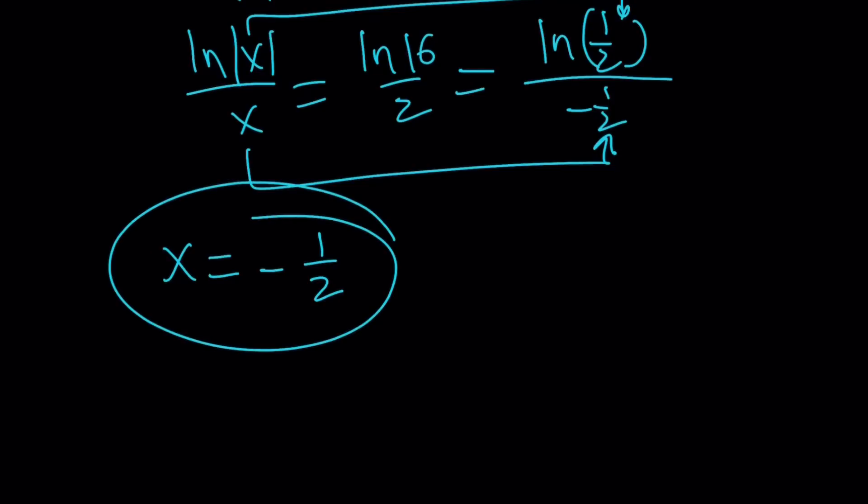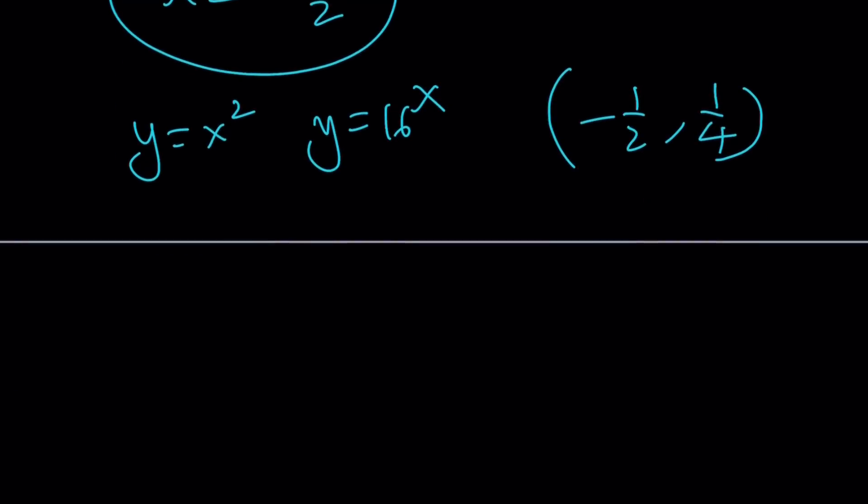But is that the only solution? Let's take a look at this. y equals x squared and y equals 16 to the x are both increasing, and they intersect at negative one half comma one fourth. We just verified it. Can they intersect again? Not on the positive side because we know 16 to the power x is just going to shoot up and never intersect the poor parabola. So let's take a look at a couple other things, and then I'll show you the two graphs. We could also check something like this on the negative side. We know positive side is not going to work.